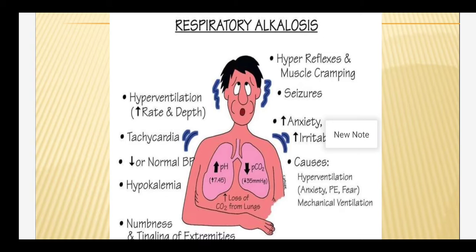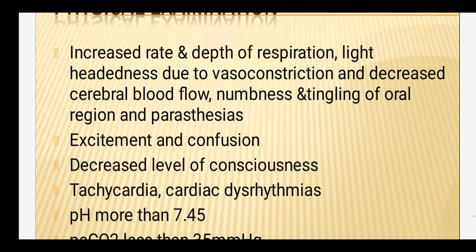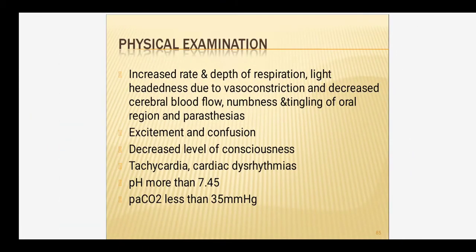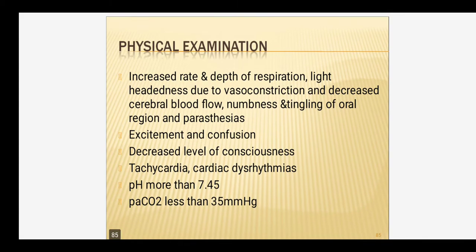Signs and symptoms of respiratory alkalosis: increased rate and depth of respiration, lightheadedness due to vasoconstriction — unlike respiratory acidosis where vasodilatation occurs — decreased cerebral blood flow, numbness and tingling of the oral region, paresthesia, excitement, confusion, decreased level of consciousness, tachycardia, and cardiac dysrhythmias. pH is more than 7.45 and PaCO2 is less than 35 mmHg. ABG analysis will clearly differentiate alkalosis from acidosis.